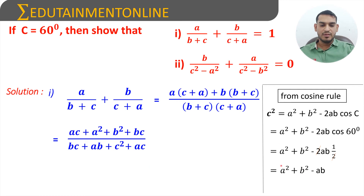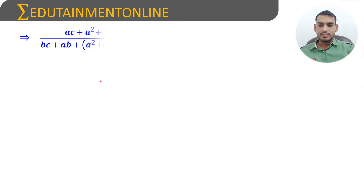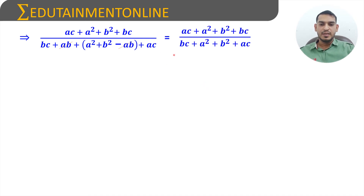Substituting c² = a² + b² - ab into the denominator: bc + ab + (a² + b² - ab) + ac. The +ab and -ab cancel, leaving: ac + a² + b² + bc. The numerator and denominator are now identical — ac, a², b², and bc — so we can cancel them.